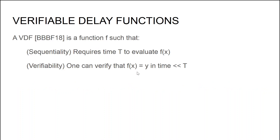Verifiable delay functions, VDF in short, is a primitive which was recently introduced by Bonet et al. in Crypto 2018. It is essentially a function f that has two properties: sequentiality and verifiability. Sequentiality says that it takes roughly time t to evaluate f, and verifiability says that one can check whether a certain input x and output y are in the relation f(x) = y in time much smaller than t. This means that verifying whether an input-output tuple is valid is much faster than actually recomputing the function itself.